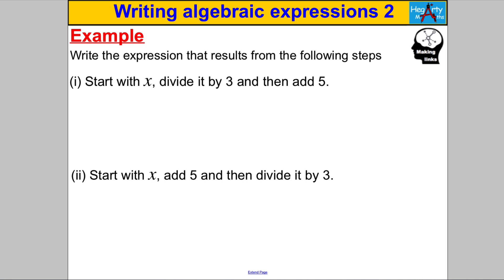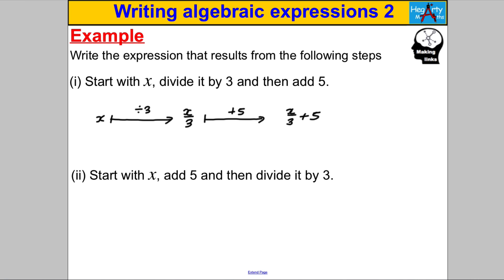Let's have a go at some more. Start with X, divide it by 3, then add 5. We start with X, divide it by 3 which gives X over 3, and then we add 5, giving X over 3 add 5. That's our answer.